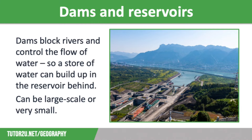The first strategy to increase water supply is dams and reservoirs. Dams block rivers and control the flow of water, enabling a store of water to build up behind it in a reservoir. Rainfall is collected and stored when precipitation levels are high and released gradually during drier periods.